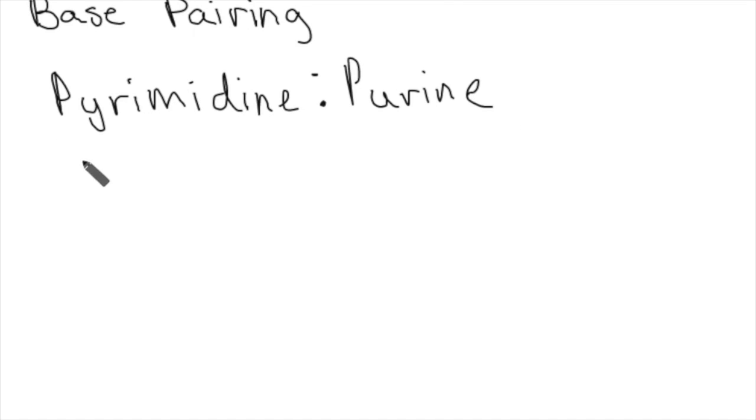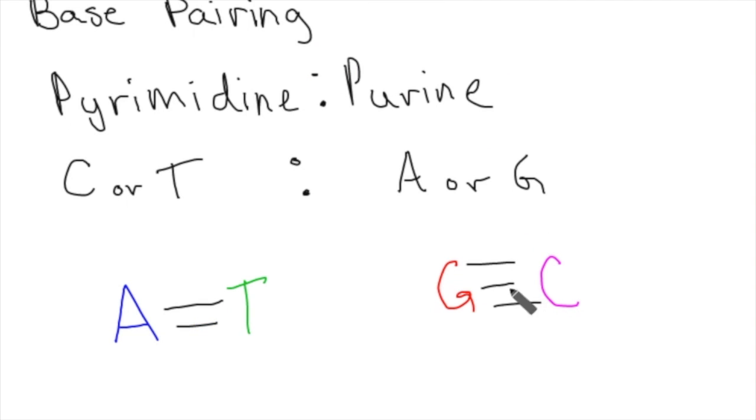Now finally, we're going to be talking about base pairing. Base pairing can only happen between a pyrimidine and a purine. So that means either cytosine or thiamine paired with an adenine or guanine. A and T always pair together, and C and G are always going to pair together. The bonds between these nucleotides are hydrogen bonds, which is why we talked about hydrogen bonding. Between A and T, there are two hydrogen bonds, and between G and C, there are three hydrogen bonds.